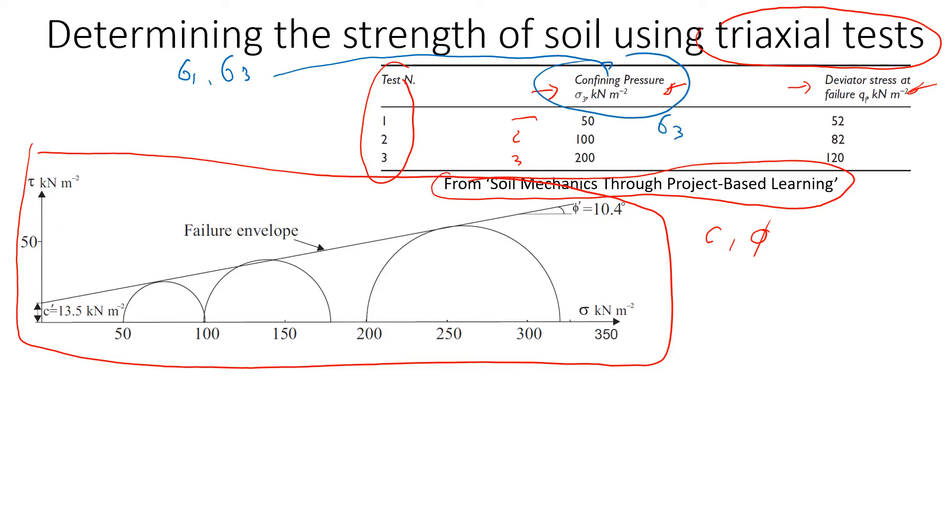We need to find sigma 1 for each test. For the first test, sigma 1 is sigma 3 plus the deviator stress, so it will be sigma 3 of 50 plus 52, which gives us 102 kPa.